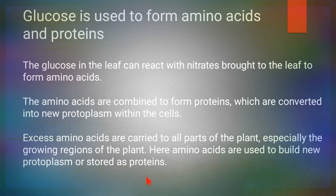Plants need proteins to grow, to form new protoplasm. For protein formation, besides glucose, nitrates are required, which are obtained from the soil in the form of minerals.